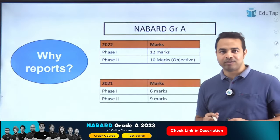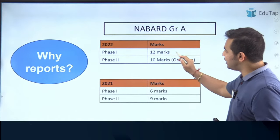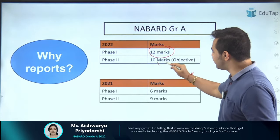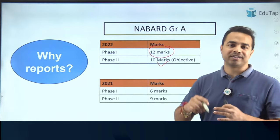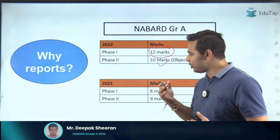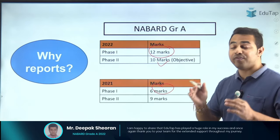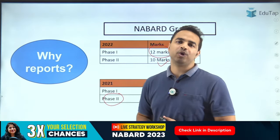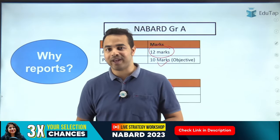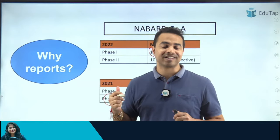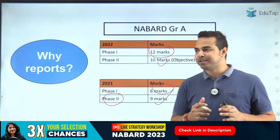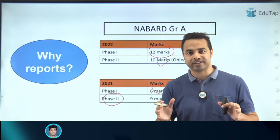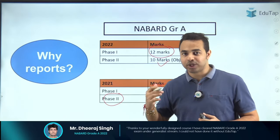The reason is this data: in Phase 1 of last year's exam, 12 marks of reports were asked; in Phase 2, 10 marks were asked. In Phase 1 of 2021, six marks were asked, and in Phase 2 of 2021, nine marks were asked. That is why we are required to cover reports and indices. Let's also see what kind of questions were asked in the previous year exam to get a fair idea.